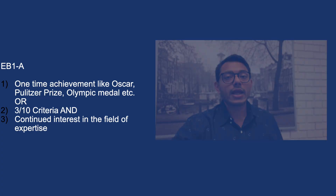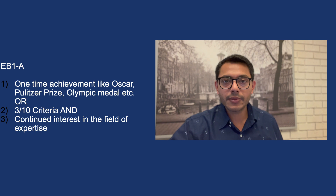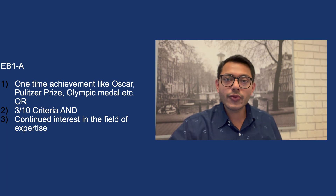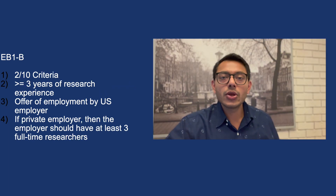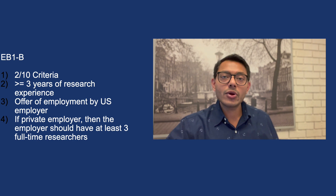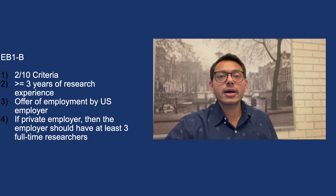For EB1A, you need to fulfill at least three out of the ten criteria we just discussed. Alternatively, if you have a one-time achievement such as an Oscar, Pulitzer Prize, or Olympic medal, you don't need to fulfill the other three criteria. You should also show an intent to continue working in your field of expertise. Importantly, for EB1A there is no offer of employment needed. For EB1B, you need to fulfill two out of the ten criteria, plus have at least three years of research experience and an offer of employment from a U.S. employer. If the employer is private, they should have at least three full-time researchers, and the position should be a tenure-track or similar research role.